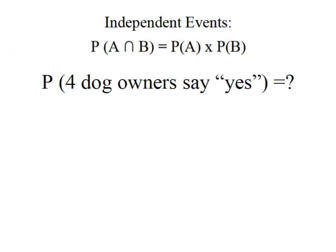These are clearly independent events. In other words, person one doesn't even know person two, who may not even live in the same state as person three, and none of them have ever met person four. So the probability that these four dog owners all say yes is an example of independent events.